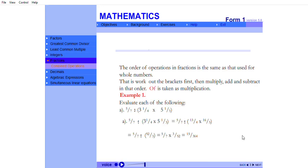The order of operations in fractions is the same as that used for whole numbers. That is, work out the brackets first, then multiply, add, and subtract in that order. Of is taken as multiplication.